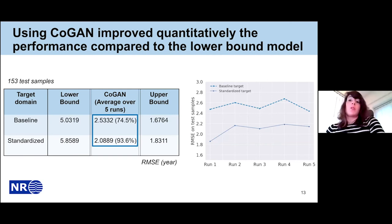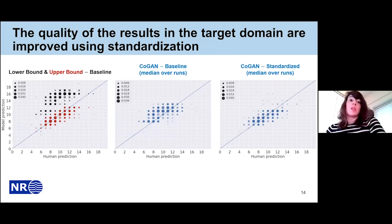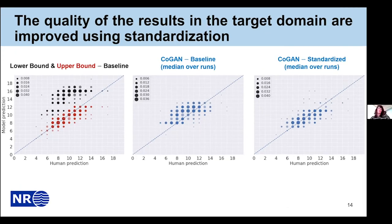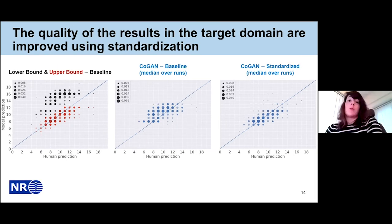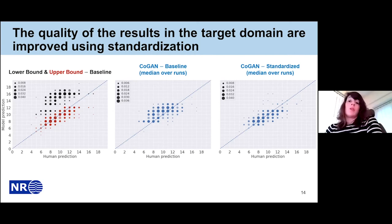Looking at model predictions versus human predictions for a more qualitative evaluation of the domain-adapted results: on the left, the lower bound model completely over-predicted the ages. This trend is corrected when we apply domain adaptation, as shown in the second and third scatter plots where we computed the median over five runs per predicted sample. Comparing standardized and baseline results, the standardized gives results closer to the upper bound model and more aligned with the diagonal. This may be because the domain adaptation problem is simpler in the standardized case, allowing the model to focus on the internal part of the otolith rather than background noise.